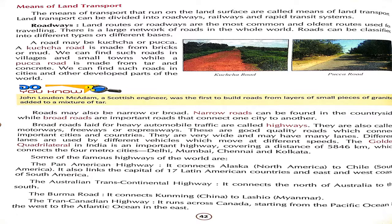Broad roads meant for heavy automobile traffic are called highways or motorways. The Golden Quadrilateral in India is an important highway which covers 5,846 km and connects four metro cities: Delhi, Mumbai, Chennai, and Kolkata. There are other famous highways as well, which you have to read about.